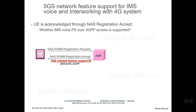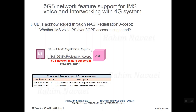There is an element in the 5GS Network Feature Support information element called IMS VOPS-3GPP (IMS Voice over PS through 3GPP access). It can be set to 0 or 1: 0 means IMS voice over PS session is not supported over 3GPP access, and 1 means IMS voice over PS session is supported over 3GPP access. To support IMS voice over PS, it should be set to 1.